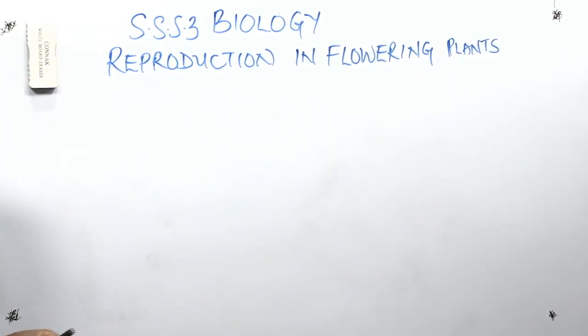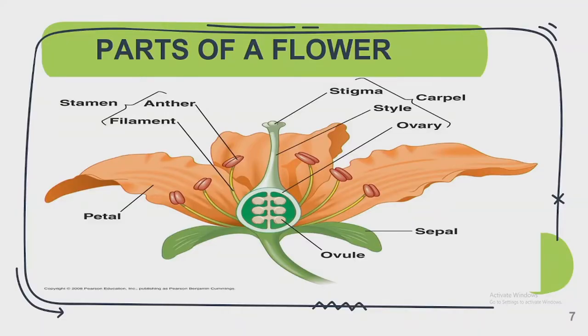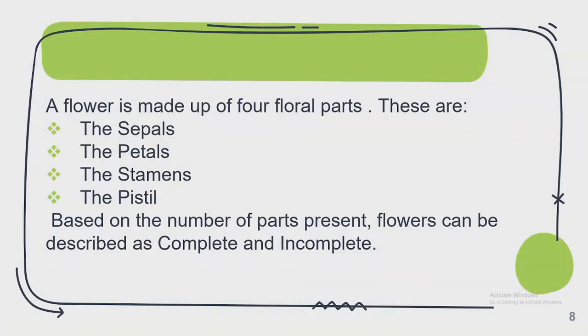That is the definition of a flower. Now that we know what a flower is, we'll be looking at the parts of a flower. A flower consists of many parts — close to ten. However, all the parts you see in a flower can be grouped into four. A flower is made up of basically four major parts.